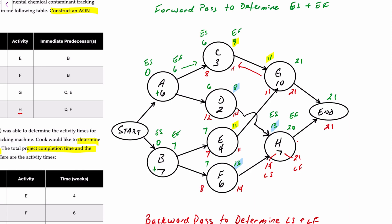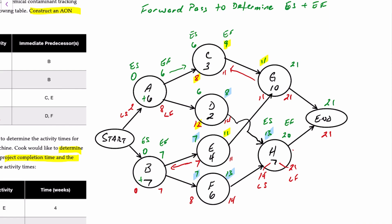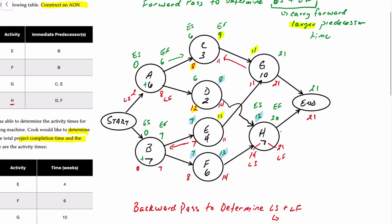For activity B, which precedes both E and F: we take the smaller of the latest start times — E's latest start is seven and F's latest start is eight — so we bring back seven. Seven minus seven is zero. For activity A, preceded by C and D: we take the smaller number back — eight minus six is two. So the latest A can start is two weeks and the latest it can finish is eight weeks. The rule of thumb: in a forward pass, carry forward the larger predecessor time; in a backward pass, carry back the smaller successor time.